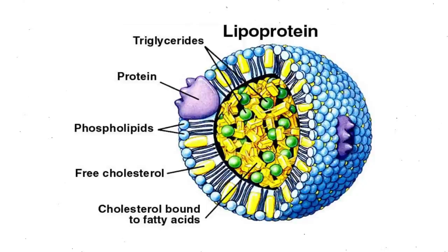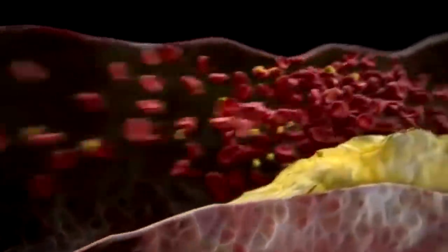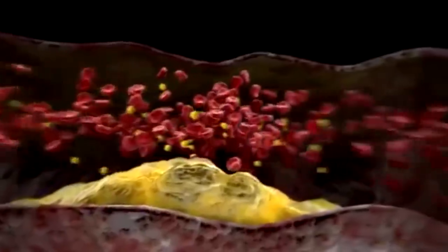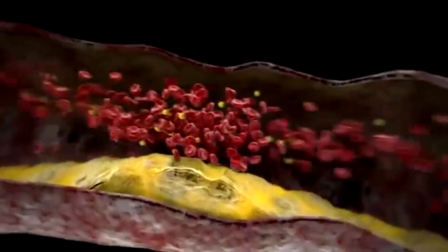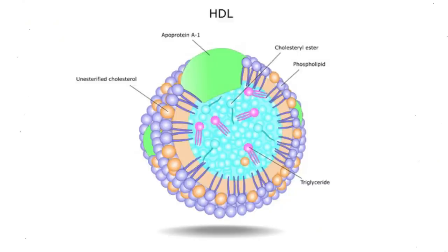Plaque sticks to the walls of your arteries and can lead to coronary artery disease, where your coronary arteries become narrow or even blocked. HDL, LDL, and VLDL are lipoproteins — a combination of fat and proteins. The lipids need to be attached to the proteins to move through the blood.